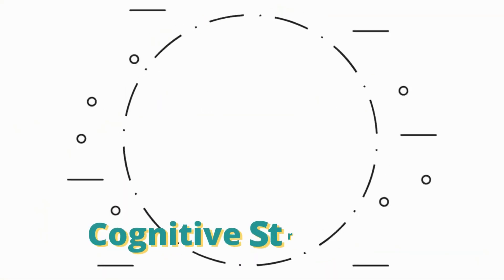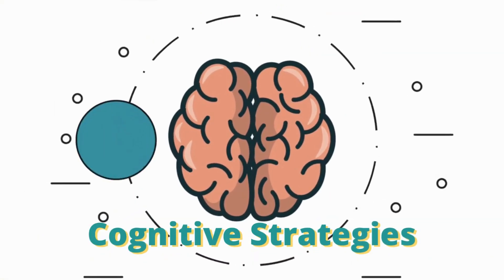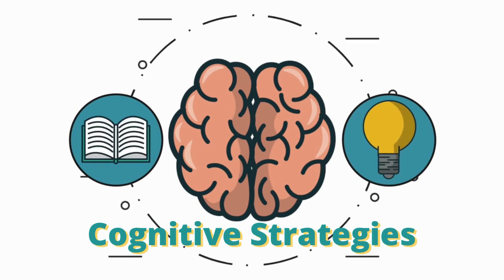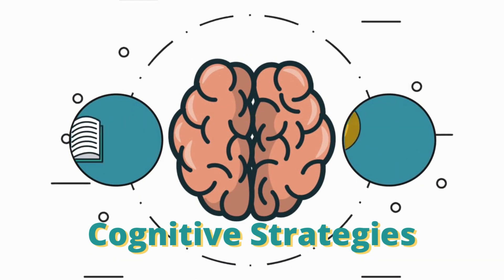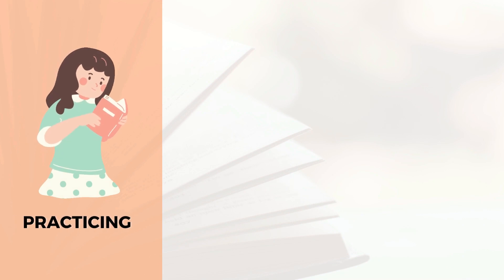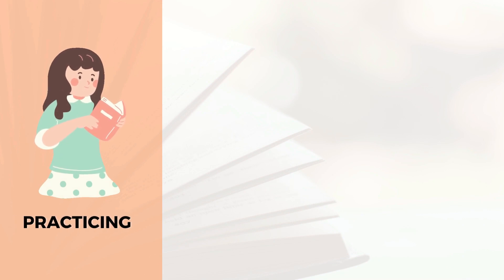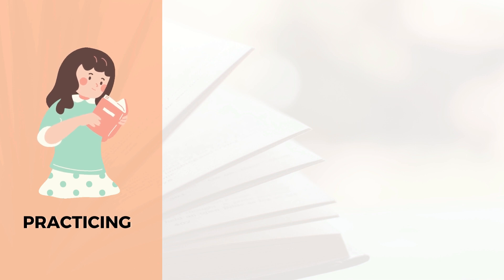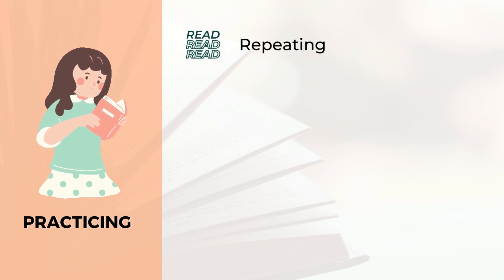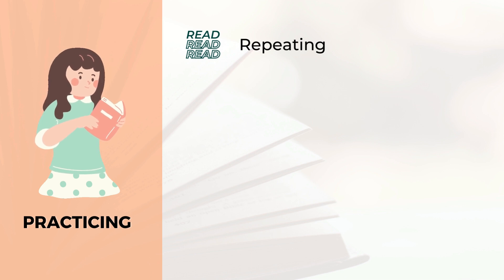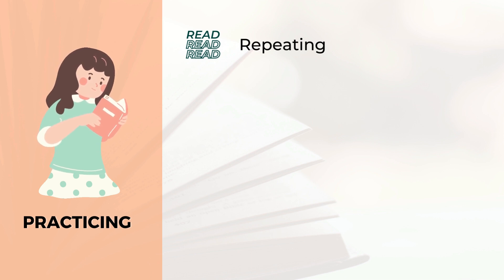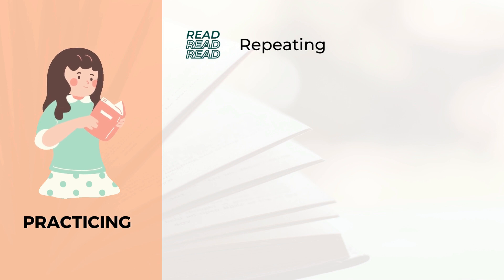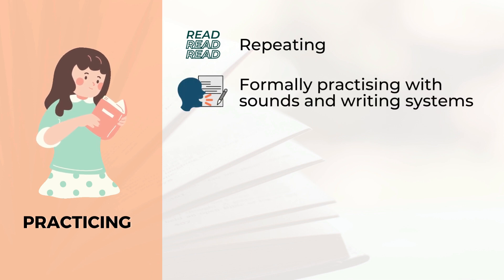The second set of strategies under the direct strategies is cognitive strategies. First off under cognitive strategies is practicing. The following techniques may be done under this strategy: one is repeating, such as listening to something several times, rehearsing, imitating a native speaker. Two, formally practicing with sounds and writing systems, such as pronunciation or writing exercises.